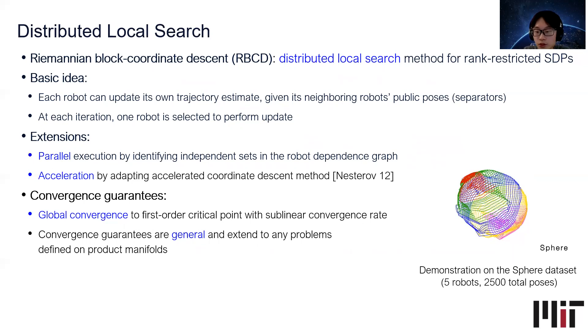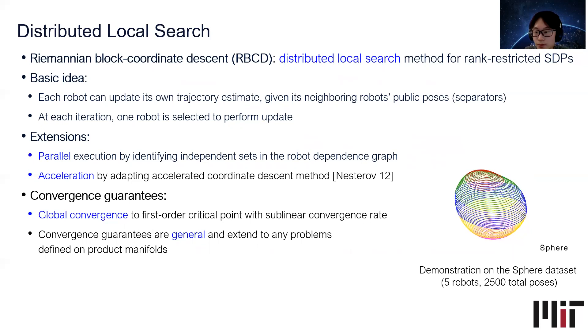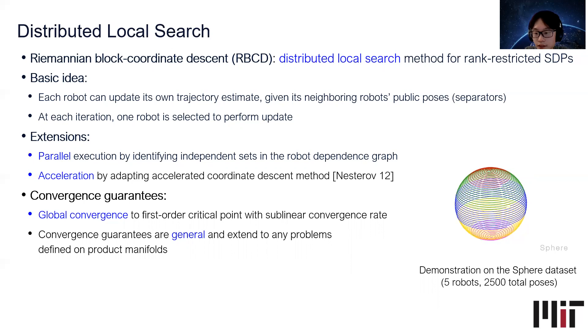On the right, I'm showing the final RBCD method performing on the Sphere dataset, which is divided into five robots with a total of 2,500 poses.